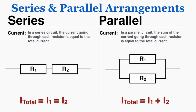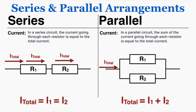There are important rules for current, voltage, and resistance in series and parallel arrangements. Starting with current: in a series circuit, the current going through each resistor is equal to the total current. In a parallel circuit, the sum of the current going through each resistor is equal to the total current. In a series circuit it's just one current consistently moving through all of them, whereas in a parallel circuit the total current breaks up into two smaller currents that go through resistor 1 and resistor 2.